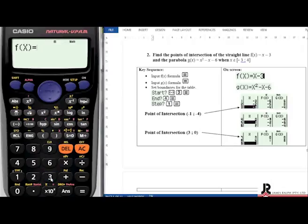F of X is asking you for your first function, which is your straight line. If you look on the worksheets, the straight line is Y is equal to X minus 3. Your X is in red above your closed brackets, so if you push Alpha X minus 3, you enter the function of your straight line.